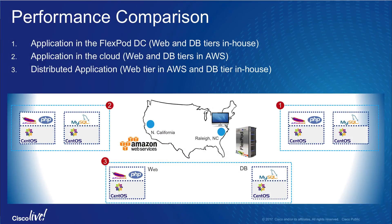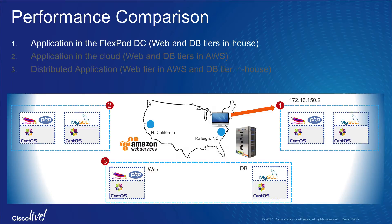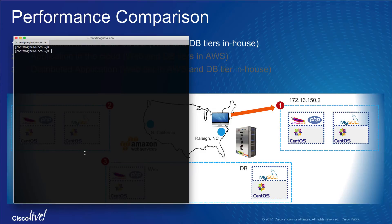Now that we have three different instances of the application deployed, let's look at response times from various instances. The FlexPod private cloud is located on the US East Coast, and the AWS zone is located on the US West Coast. A client in an adjacent facility to the FlexPod data center will access all three instances. We will utilize the curl command to measure page response times. Since the FlexPod instance is closest to the client, we expect the fastest response from this instance.